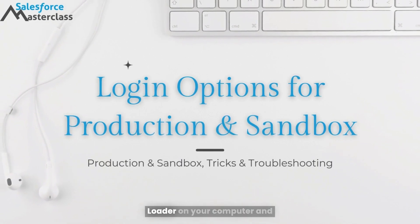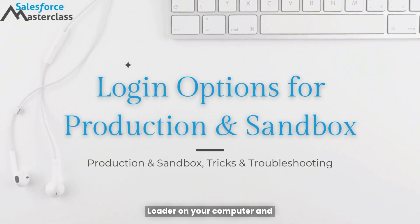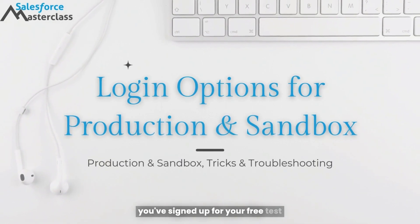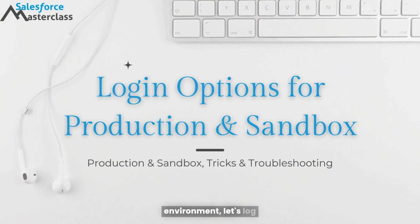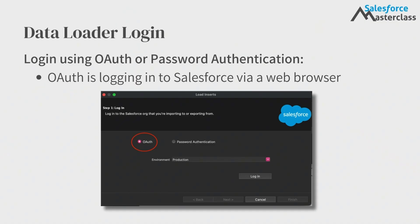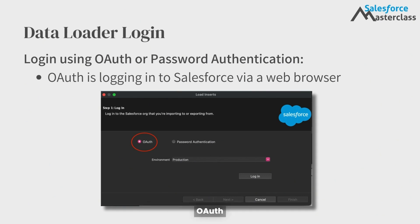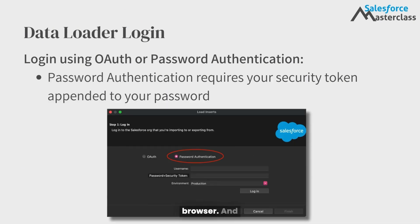Now that you've installed Dataloader on your computer and you've signed up for your free test environment, let's log in. The two Dataloader login methods are called OAuth and Password Authentication. OAuth launches a Salesforce login window from your default web browser, and Password Authentication prompts you to log in with your Salesforce credentials and a security token.